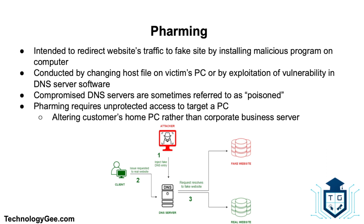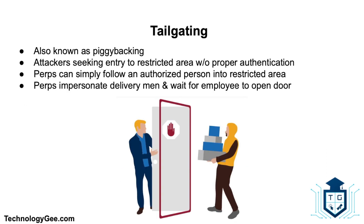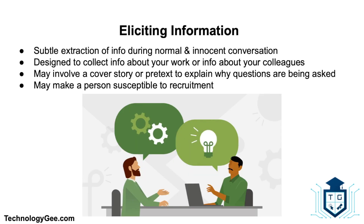Pharming requires unprotected access to target a computer, such as altering a customer's home computer rather than a corporate business server. Next we have tailgating, a common social engineering attack also known as piggybacking. It involves attackers seeking entry to a restricted area without proper authentication. The perpetrators can simply follow an authorized person into a restricted location, impersonate delivery men carrying packages waiting for an employee to open the door, or ask the target to hold the door, bypassing electronic access controls.